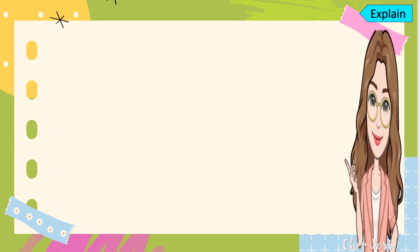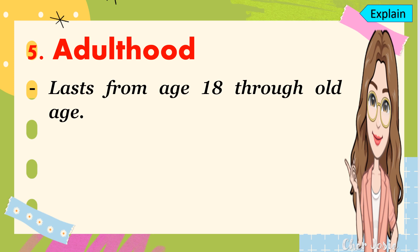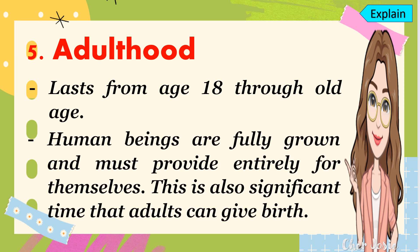The last stage is the adulthood stage, which lasts from age 18 through old age. Human beings are fully grown and must provide entirely for themselves. This is also a significant time when adults can give birth, as they are already mature enough to take care of themselves.